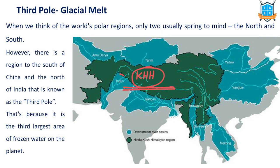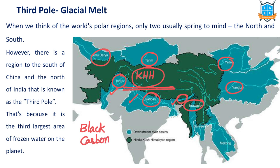The third pole region is home to many important rivers including the Indus, Amudarya, Tarim, Ganga, Brahmaputra, Irrawaddy, Yellow, and Yangtze rivers. India's Gangetic, Brahmaputra, and Indus plains are dependent on water from this region. If heavy glacial melt occurs, it initially leads to floods, and then once glaciers melt rapidly, the region may experience droughts. This region is also experiencing heavy air pollution in the form of black carbon from incomplete combustion of organic material. Black carbon deposits on glaciers absorb more sunlight, accelerating glacial melting.